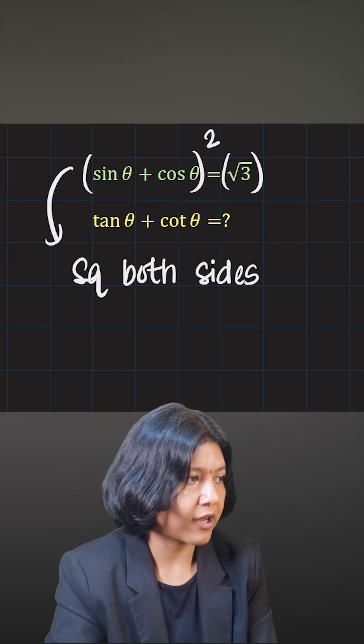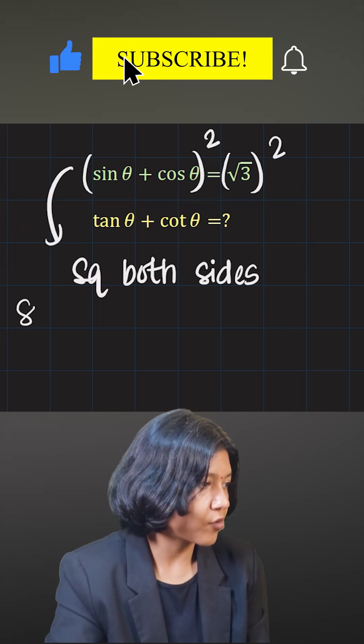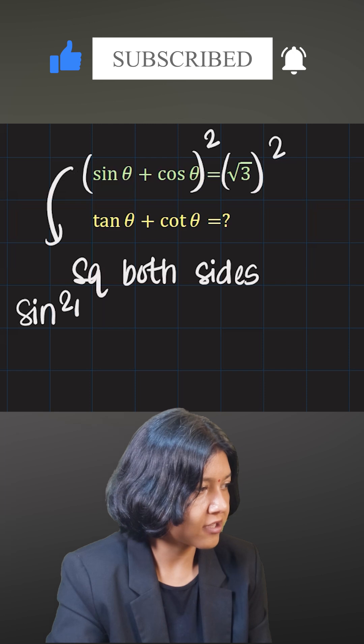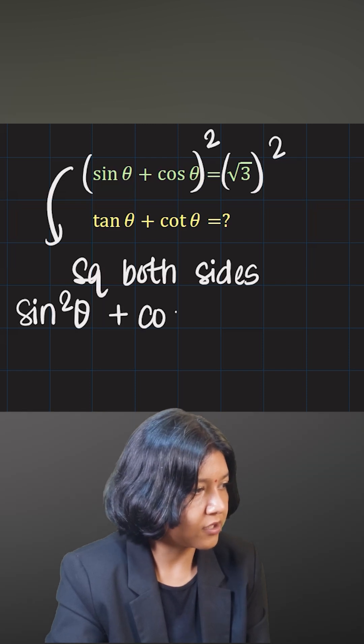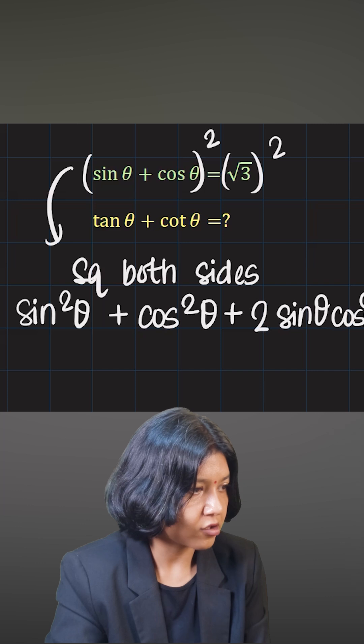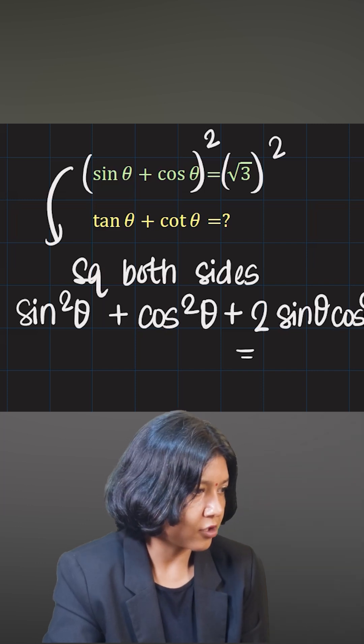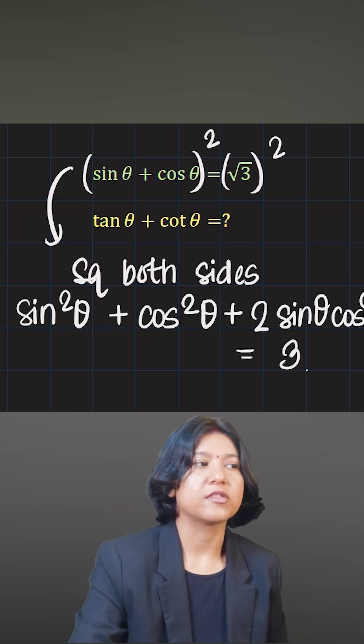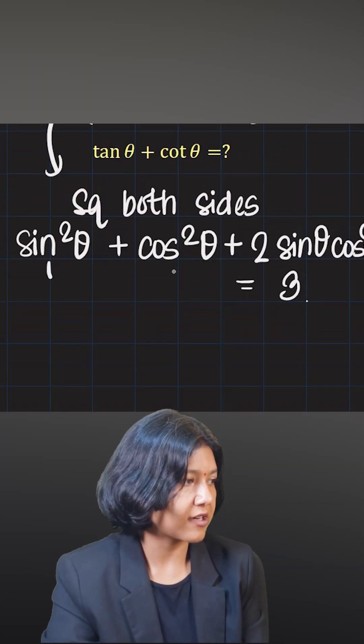has to be the square of root 3. That is what we are going to do. So sine square theta - upon expansion I'll have A square plus B square plus 2AB, so 2 sine theta cos theta. That should be equal to root 3 whole squared, which gives me 3.